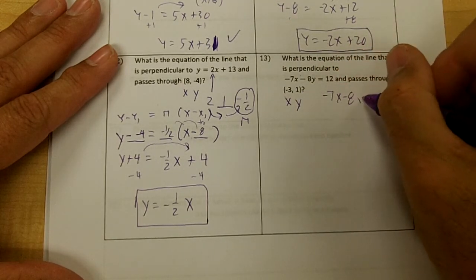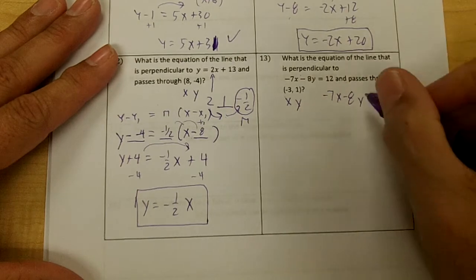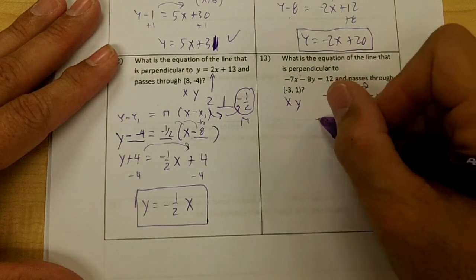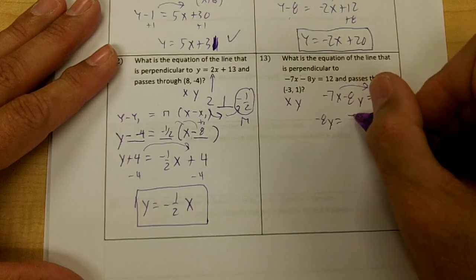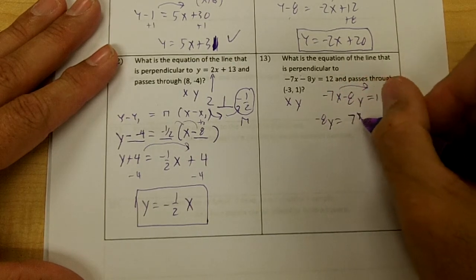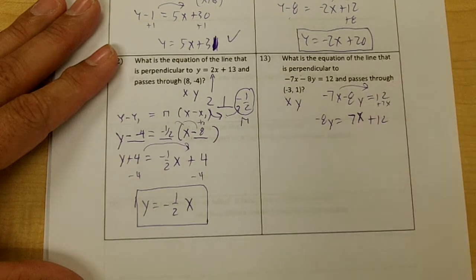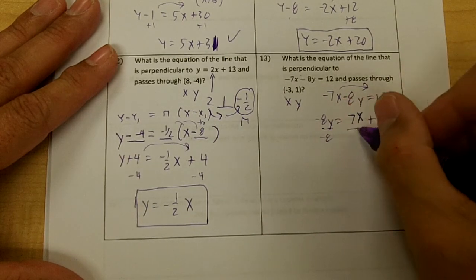So this is in standard form, and I've got to switch it to y equals mx plus b. So I'm going to move over the 7x: negative 8y equals negative 7x plus 12. You're going to add the 7x across, aren't you? Then divide everything by negative 8.